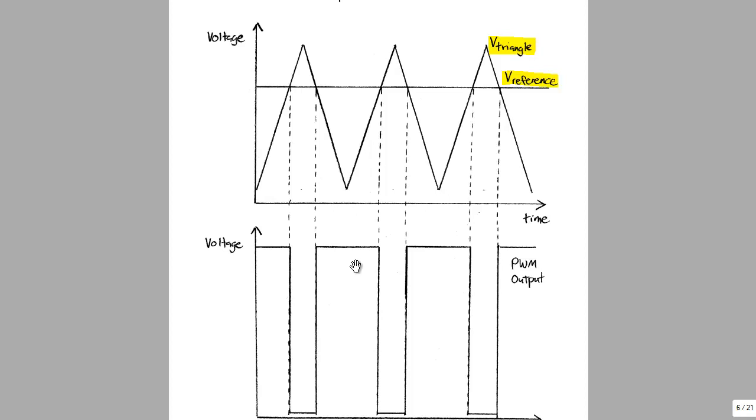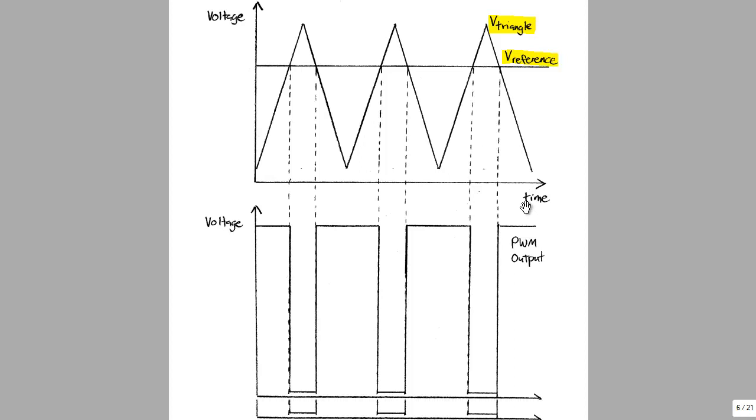You could also invert this by selecting a different mode on the pulse width modulated output. The only problem would be that when the reference signal was largest, the pulse width modulated output would be smallest. If we want to light an LED, we want the pulse width modulated output to be largest when the reference is largest. So you can set that all in software. It's fairly simple.